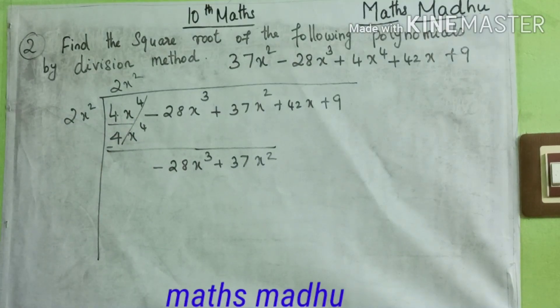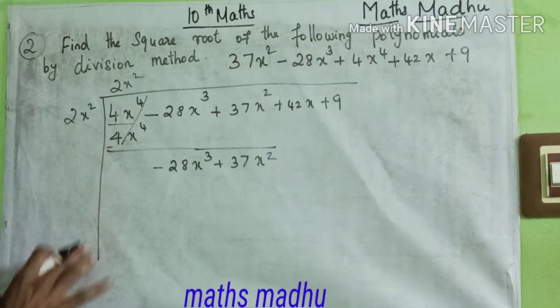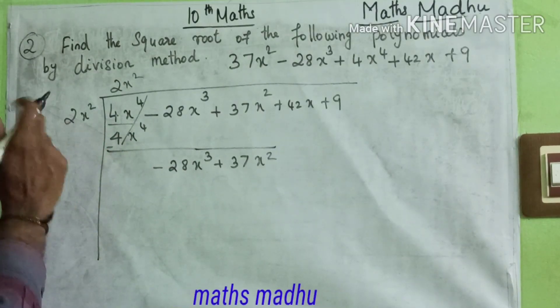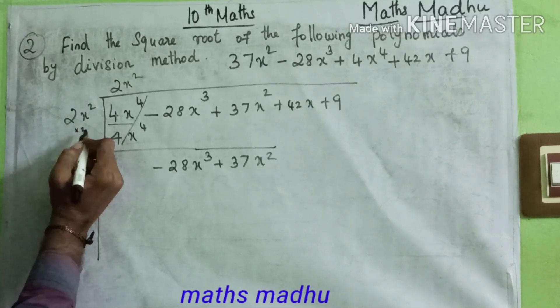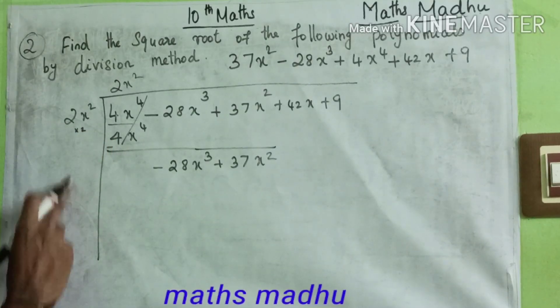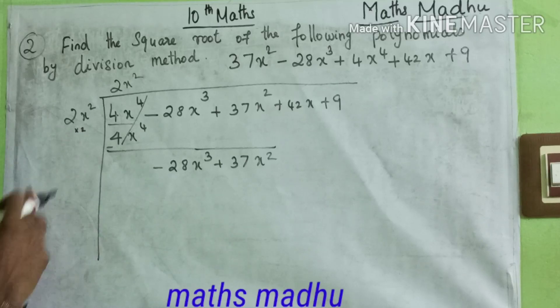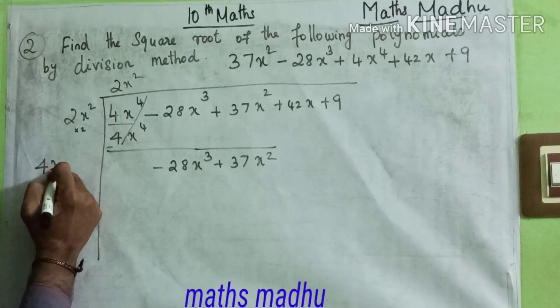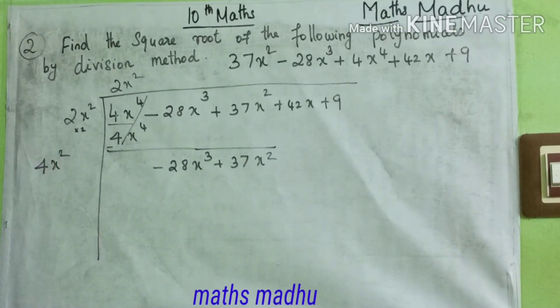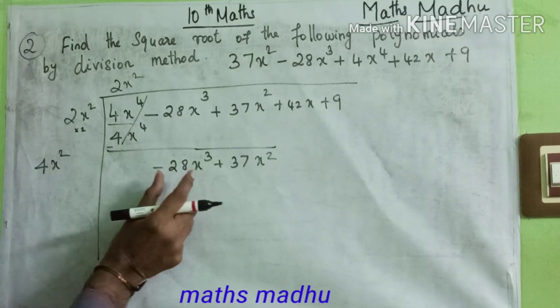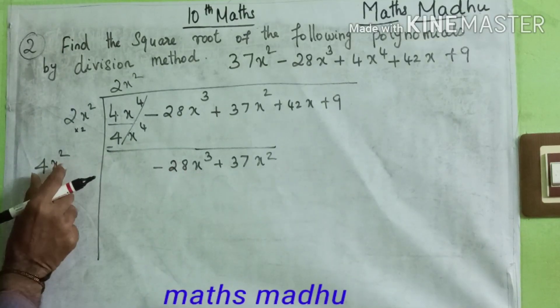Minus 28x³ plus 37x². So next is 2 variable negative 1. So here we have to have all number 4 divided. We have all the number 2, let's go to the power.